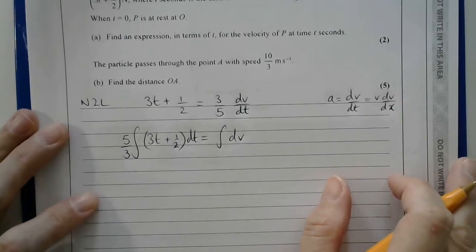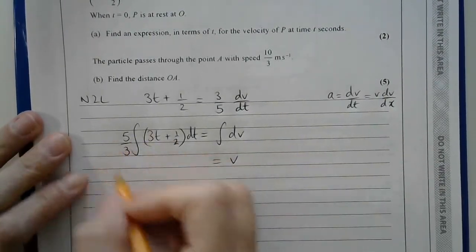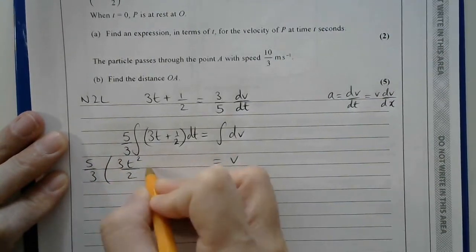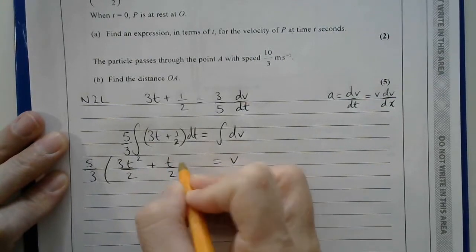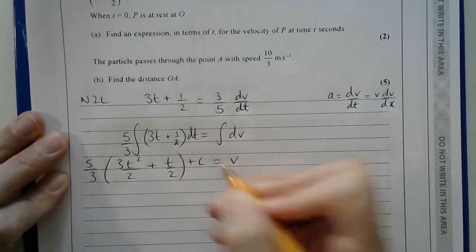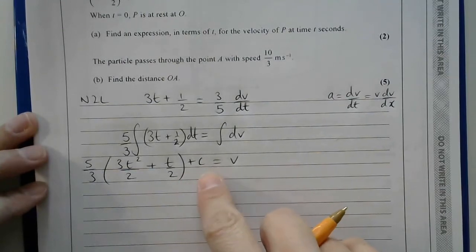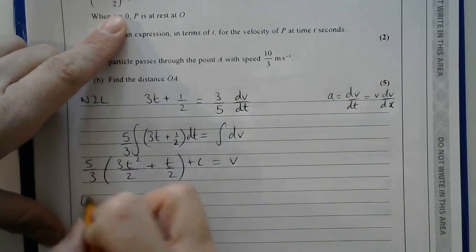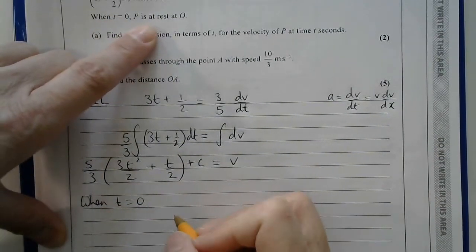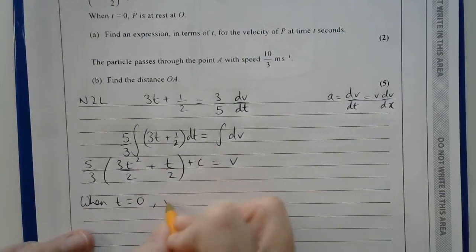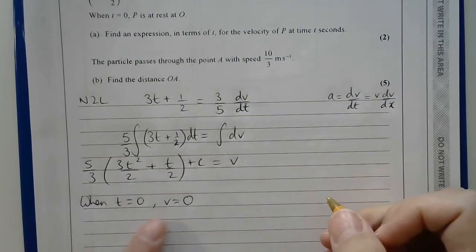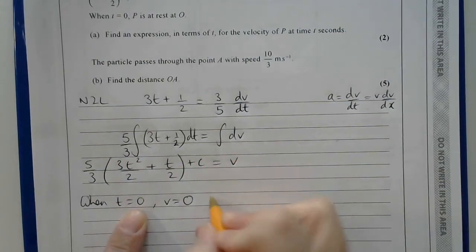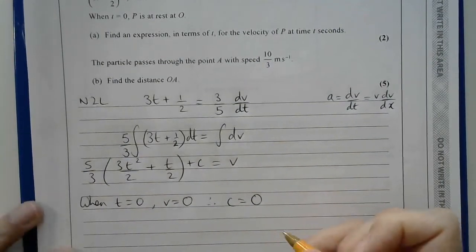Now I can separate and integrate in order to end up with an expression of v in terms of t. So let's get this 3/5 out of the way. I'll multiply both sides by 5/3. On the right-hand side, I end up with the integral of 1 dv. Integrating the right-hand side, I end up with v. Integrating the left-hand side, I have 5/3, 3t squared divided by 2, plus t/2, plus a constant. And now I need some initial conditions in order to work out this constant.